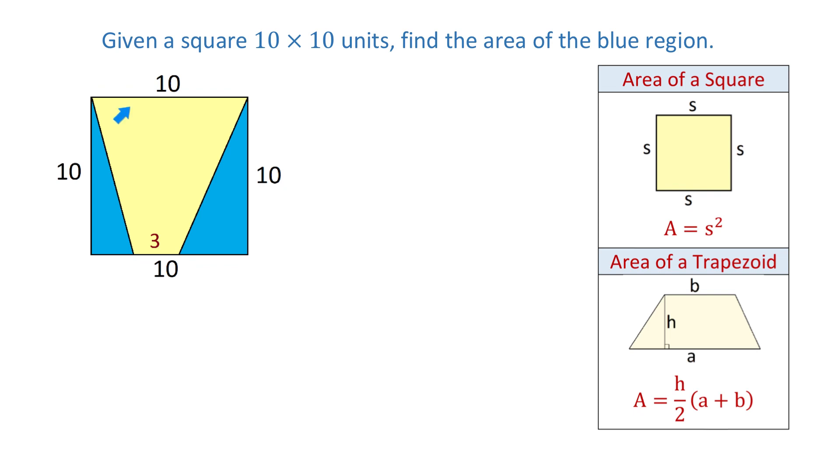The height of our trapezoid is 10 because it is the same as the side of the square. The area of the blue region will be equal to the area of the square, which is 10 squared, minus the area of the trapezoid.